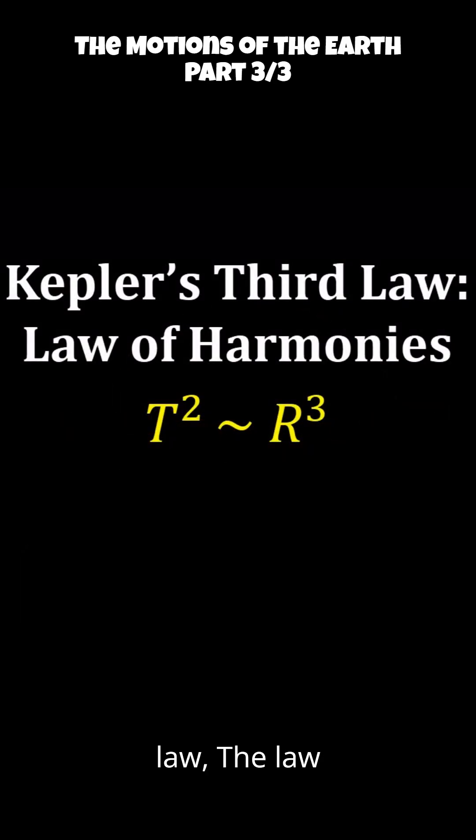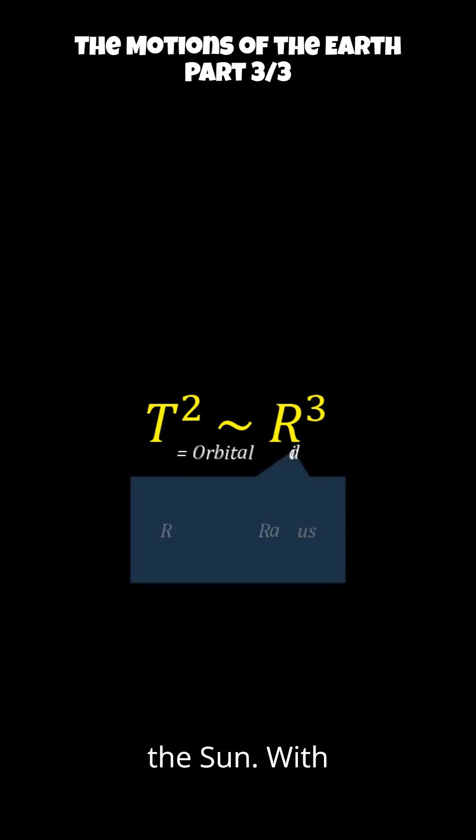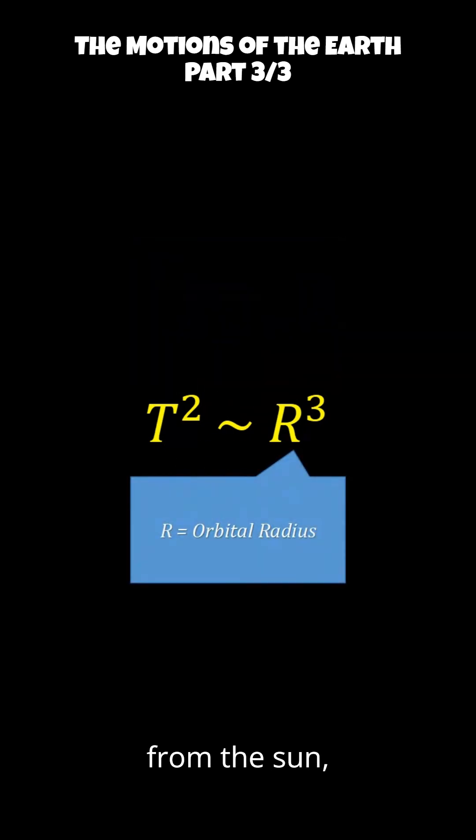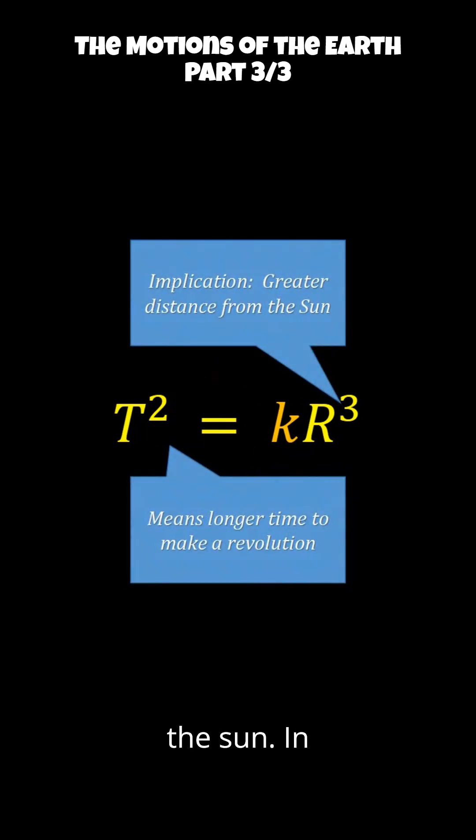Kepler's Third Law, The Law of Periods. The Third Law connects how long it takes Earth to orbit the sun with how far it is from the sun. Specifically, the square of the Earth's orbital period (how long it takes to go around once) is proportional to the cube of the average distance from the sun.